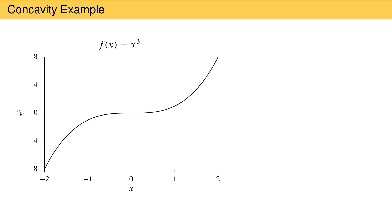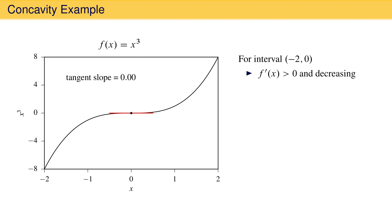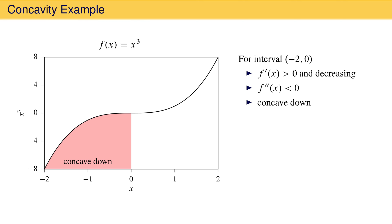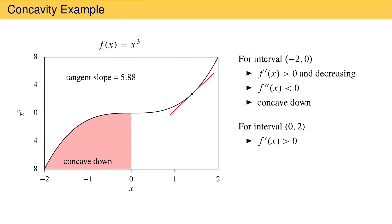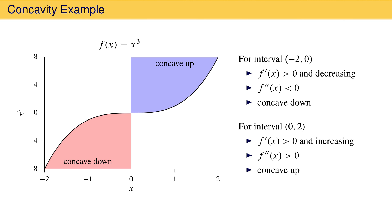Let's look at the concavity of the function x cubed. For values of x less than 0, the first derivative is positive and decreasing towards 0 at the critical point. This means the second derivative is negative in this interval, making the curve concave down in that region. For values of x larger than 0, the first derivative is again positive and it is increasing, making the second derivative positive. The curve is therefore concave up for x greater than 0.